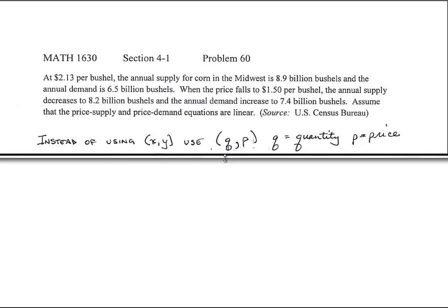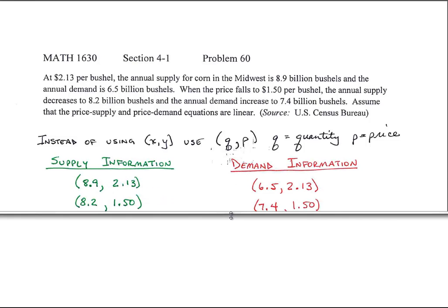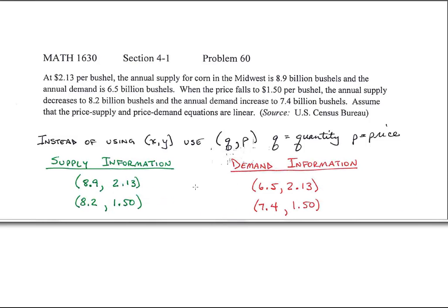First thing, instead of using X comma Y for a point, let's use Q and P, where Q is quantity and P is price. Normally that's what they do with supply and demand. If that's the case, then I've got this information because they told me. Now remember, Q is quantity.